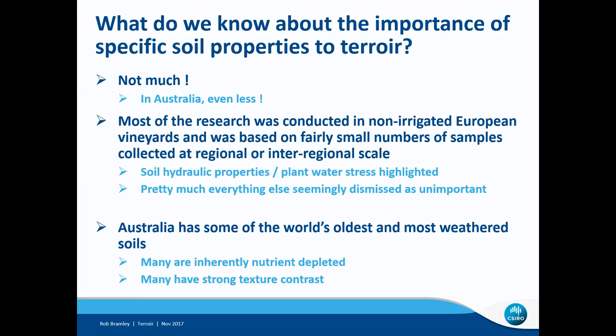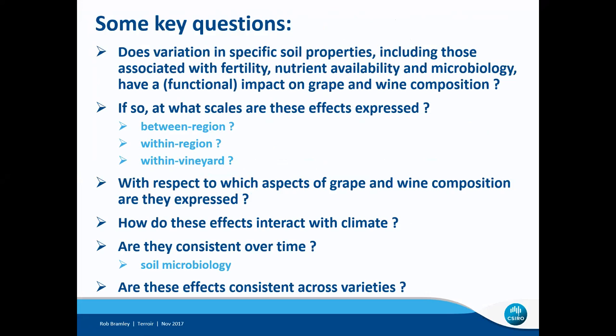There are some key questions we need to be asking if we want to focus on terroir in Australia, particularly from the point of view of soil variation. These include: does variation in specific soil properties — including those associated with fertility, nutrient availability and microbiology — have a functional impact on grape and wine composition? If they do, at what scale are these effects expressed — between regions, within region, or within vineyard? And with respect to which aspects of grape and wine composition are these effects expressed?